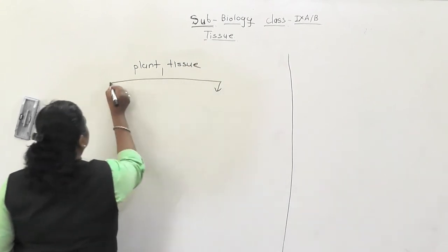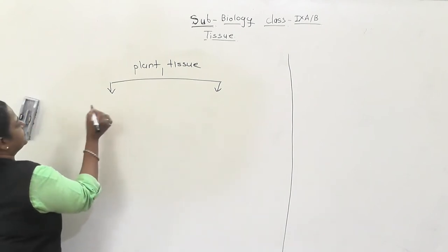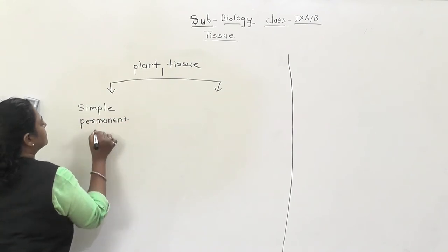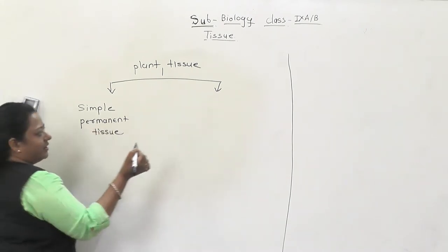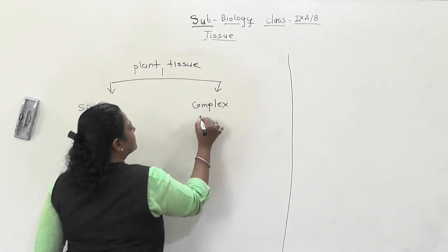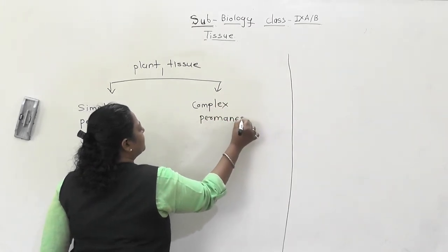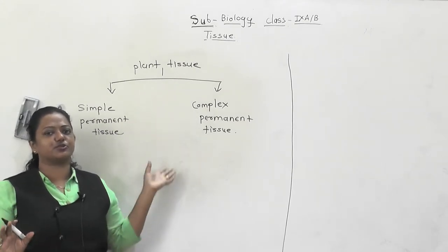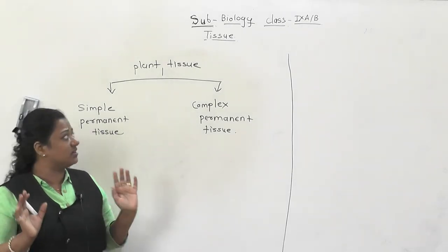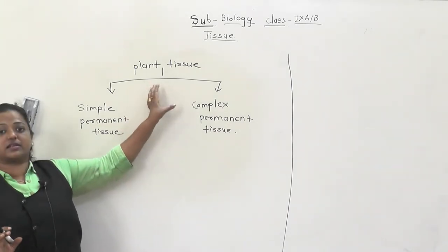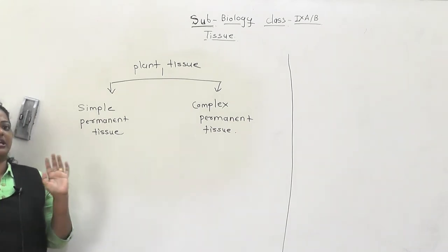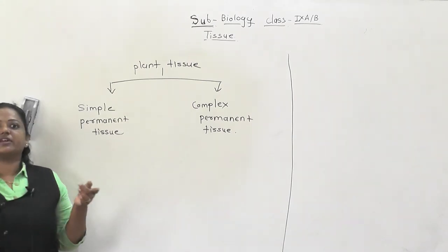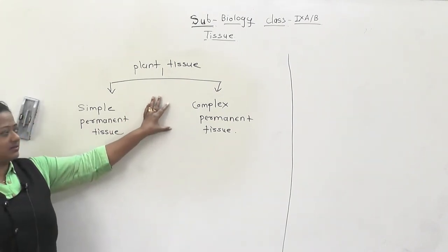The two main types are: first, simple permanent tissue, and second, complex permanent tissue. You all know that meristematic tissue, after its particular growth, turns into permanent tissue. This change into permanent tissue happens after its particular growth is complete.